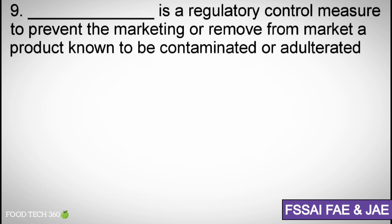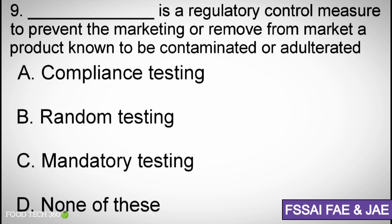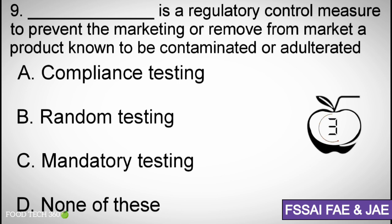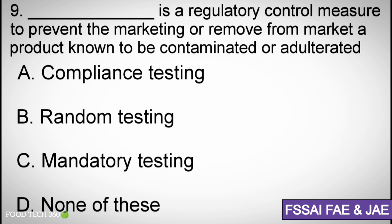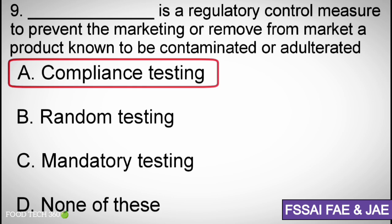Question number nine: Blank is a regulatory control measure to prevent the marketing of, or remove from market, a product known to be contaminated or adulterated. Options: (a) compliance testing, (b) random testing, (c) mandatory testing, (d) none of these. Correct answer: (a) compliance testing.